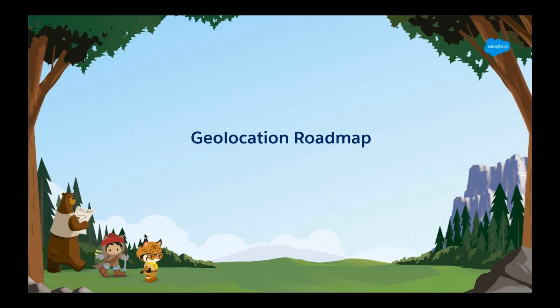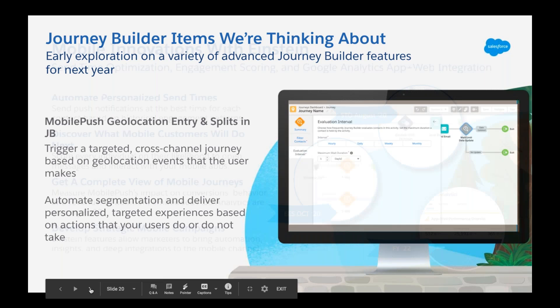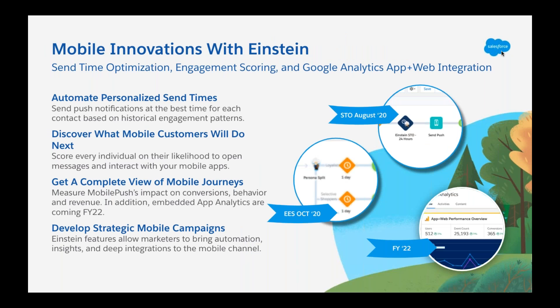We're also working on Einstein features to bring AI-driven strategies to mobile campaigns — allowing marketers to automate, get insights, and enable deep integrations within the mobile channel. Things that have recently launched include Send Time Optimization for mobile push, which came out in August — the same capability you know from email, now for mobile push. Einstein Engagement Scoring is being brought into Journey Builder for mobile, and a deeper Google Analytics app and web integration is coming out in 2022.